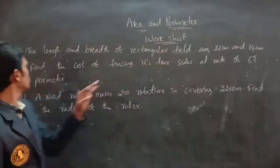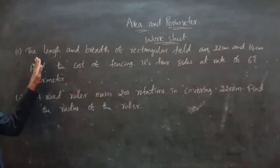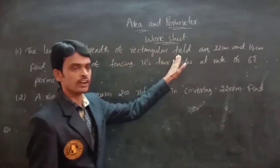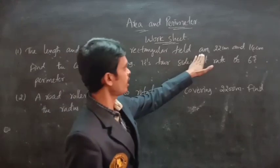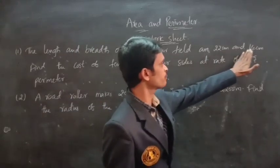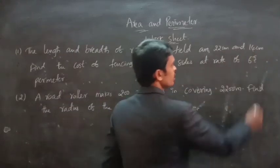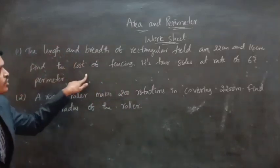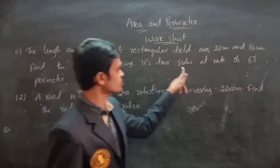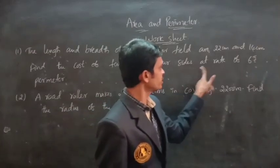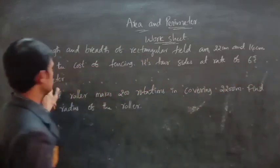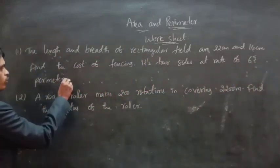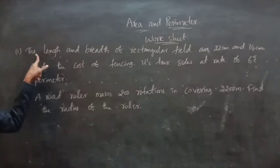Worksheet: First problem — the length and breadth of a rectangle are 22 centimeters and 14 centimeters. Find the cost of fencing its sides at a certain rate of rupees per meter.